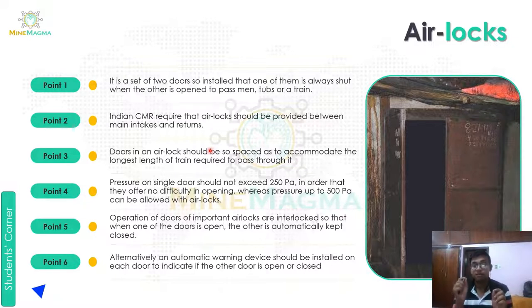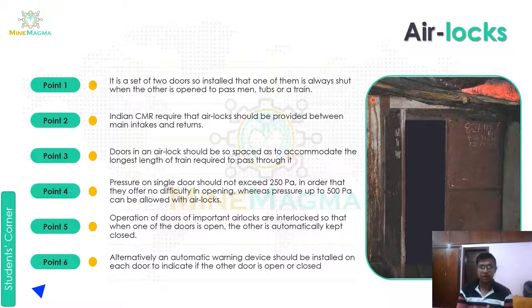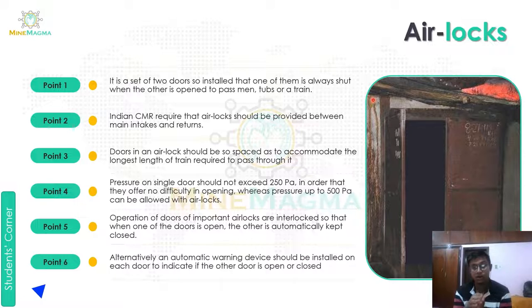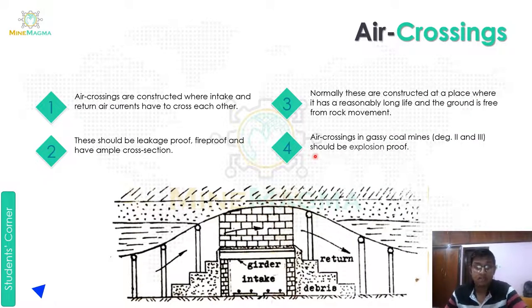Fifth point: when one door opens, the other door closes by itself automatically — it will not need to be closed manually. Sixth point: alternatively, an automatic warning device should be installed on each door to indicate if the other door is open or closed. If due to machinery failure both doors end up open simultaneously, the warning device alerts personnel to that situation.